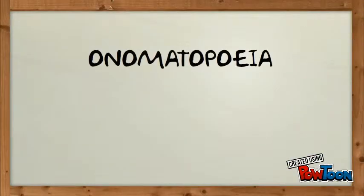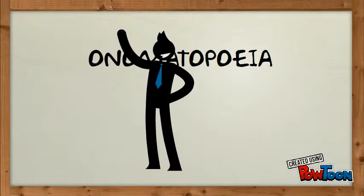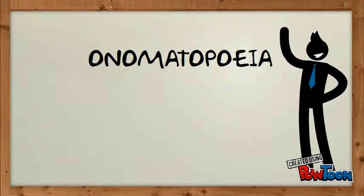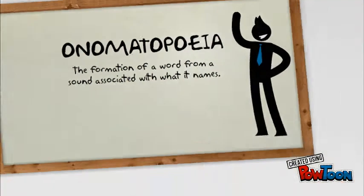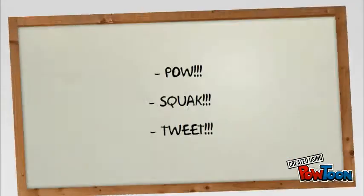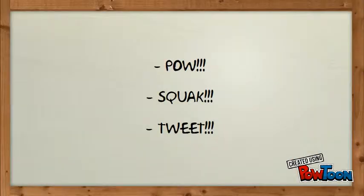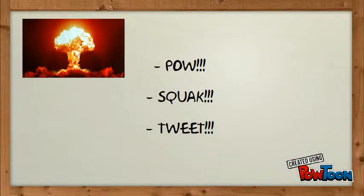The next literary device is onomatopoeia. Onomatopoeia is the formation of a word from a sound associated with what it is named. Some examples are pow, squawk, and tweet.